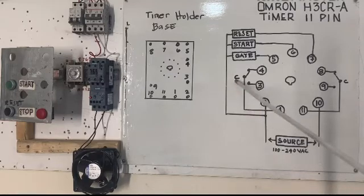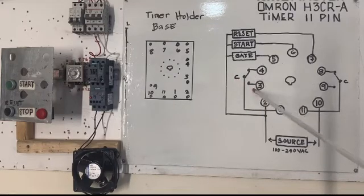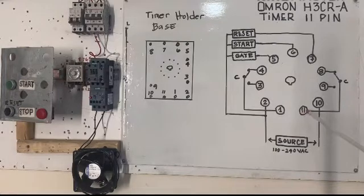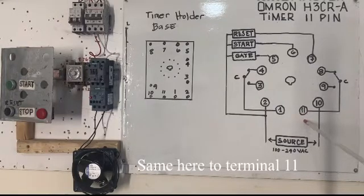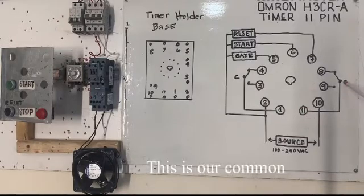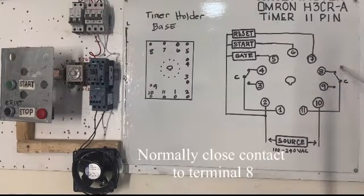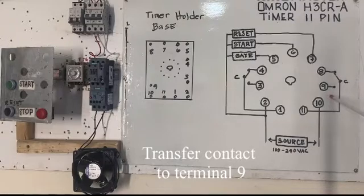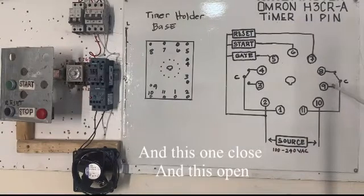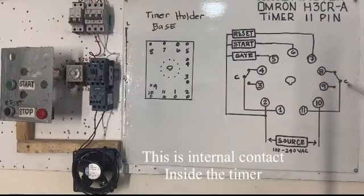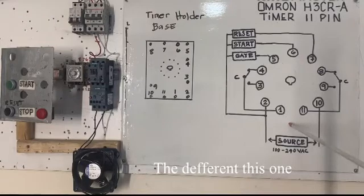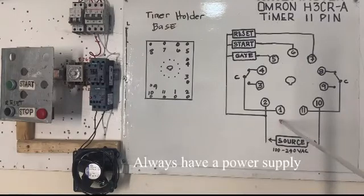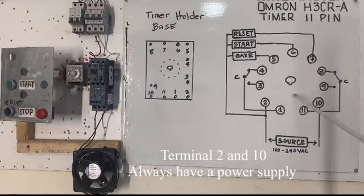Terminal 1 is our common changing position, like auxiliary contact. Pareho dito sa terminal 11. This is our common and normally close contact to 8. When timer start counting 5 seconds, transfer to 9 contact and this one close and this one is open. This is NO contact sa loob ng timer. The different, this one always have a power supply, yung terminal 2 and 10.